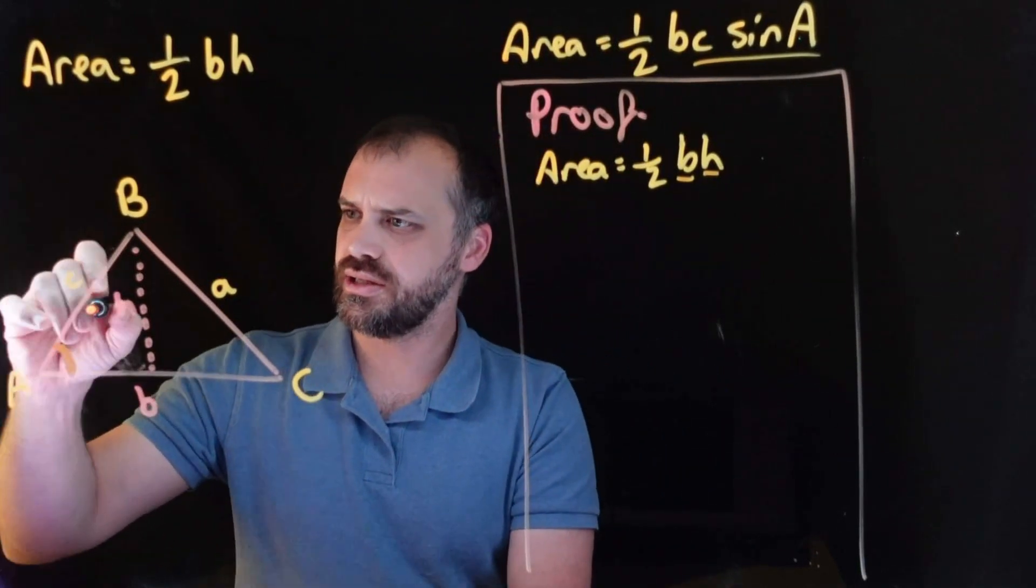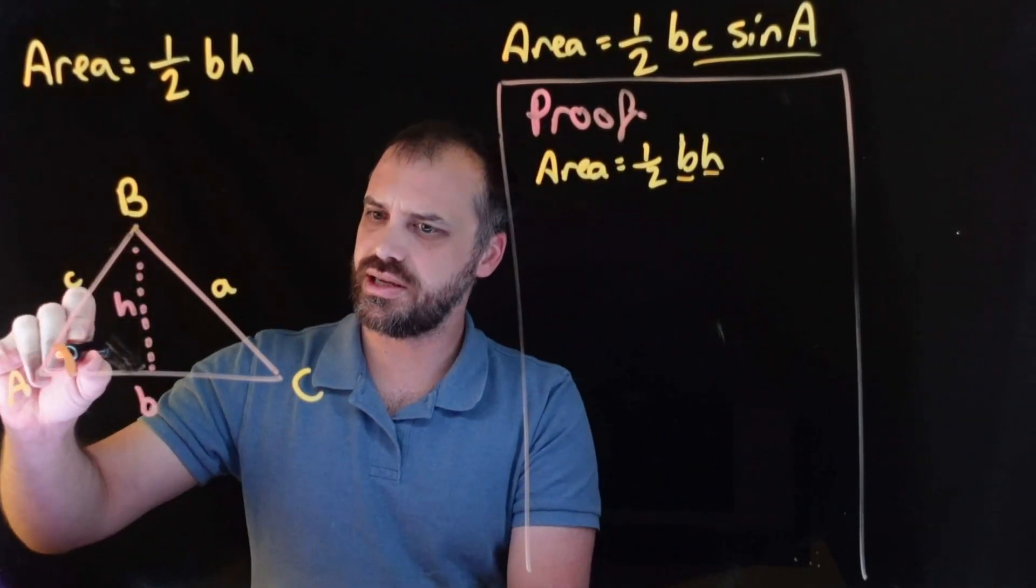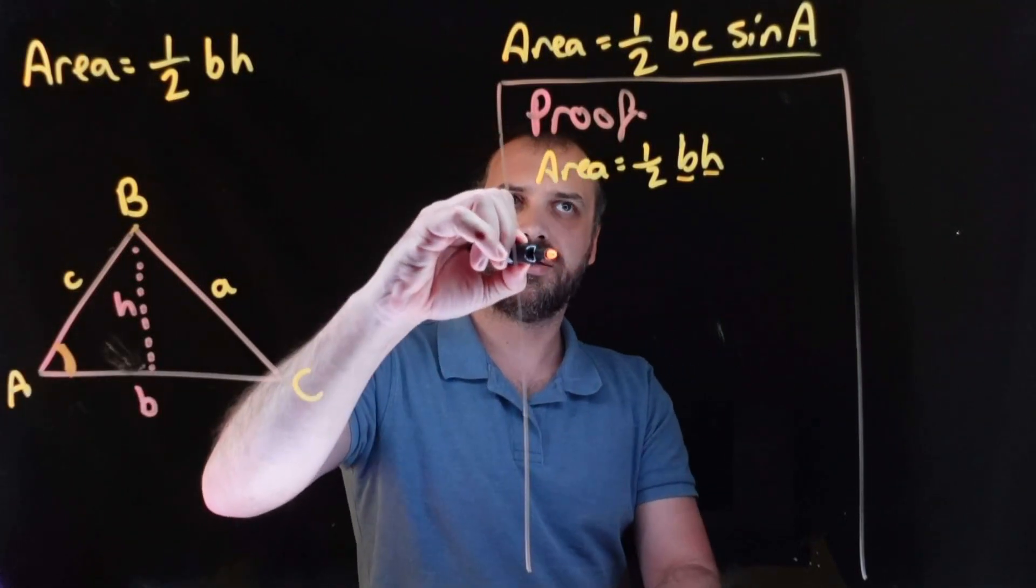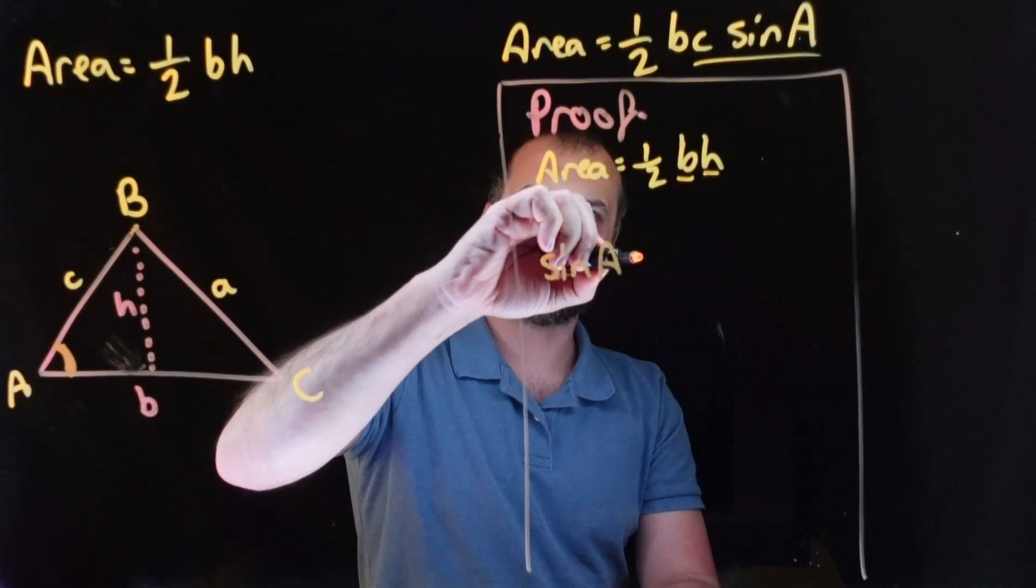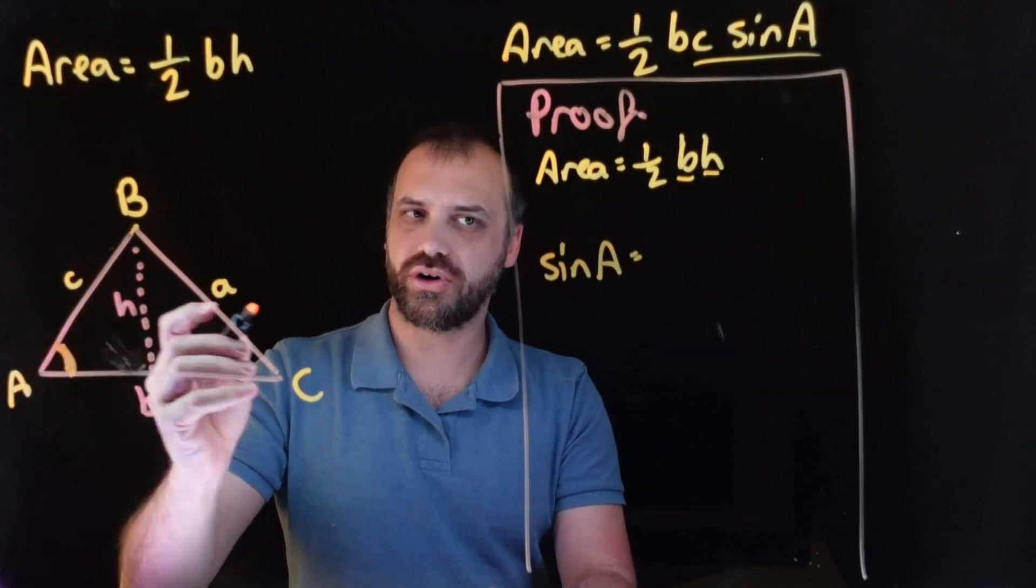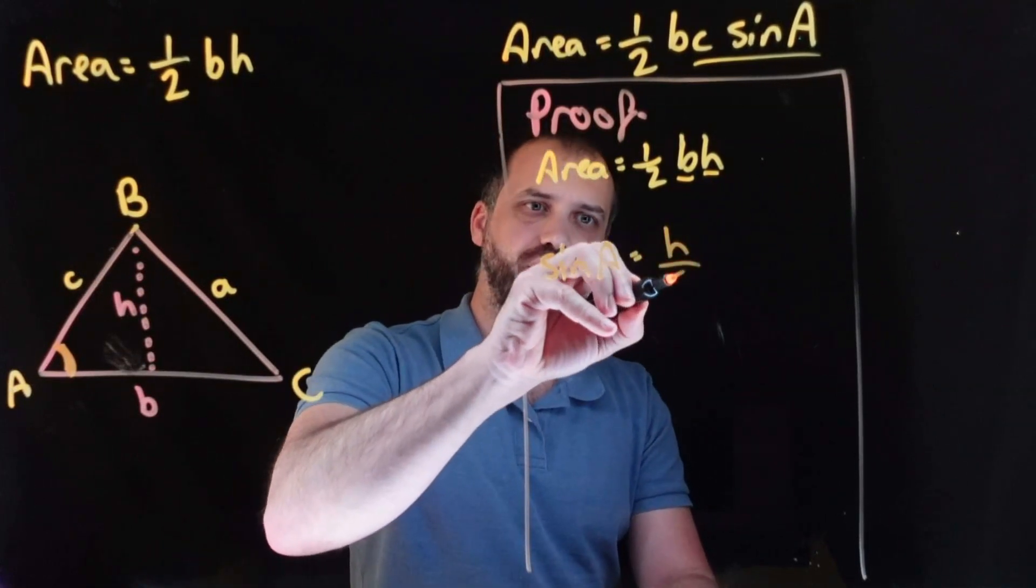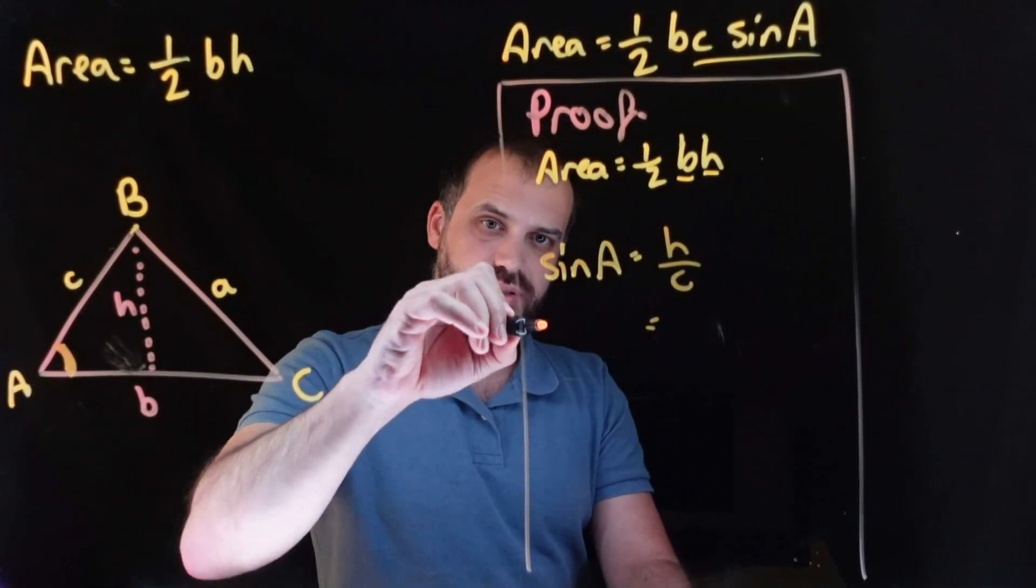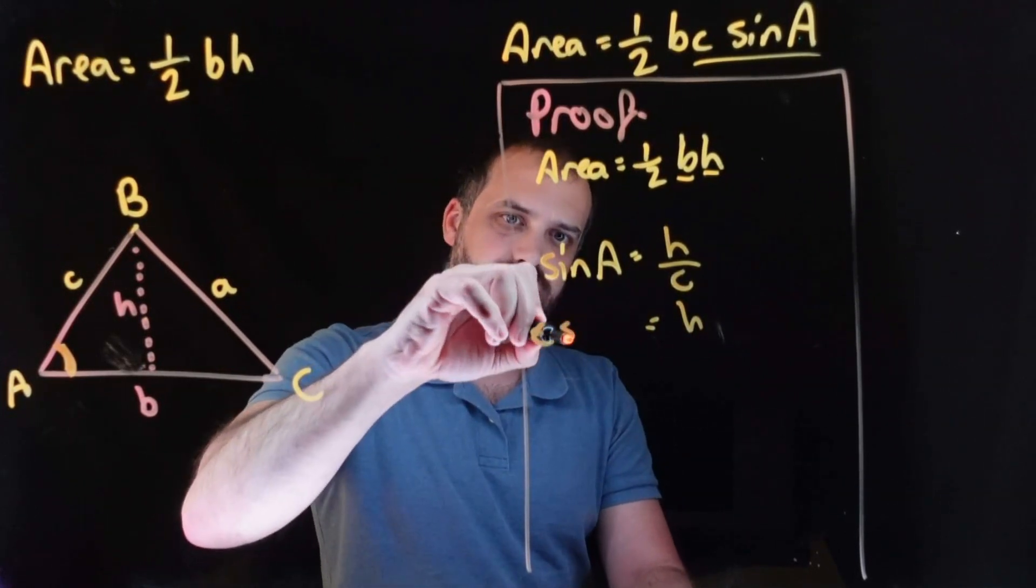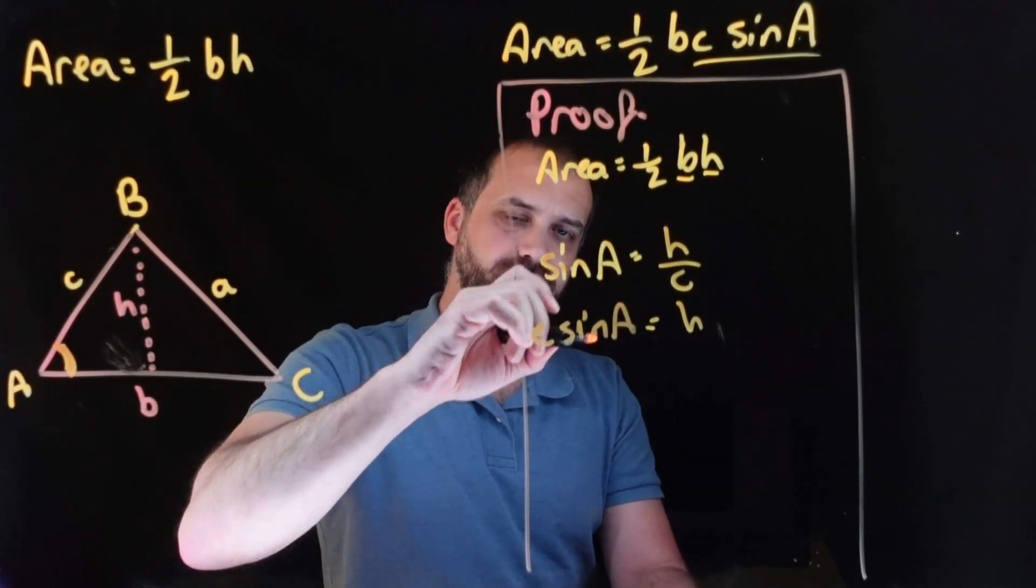This is an angle here. This is a length C here. I feel like this is going to be very simple, right? Because we can say that sine A is equal to opposite over hypotenuse, H over C. And then we can say that H is equal to C sine A.